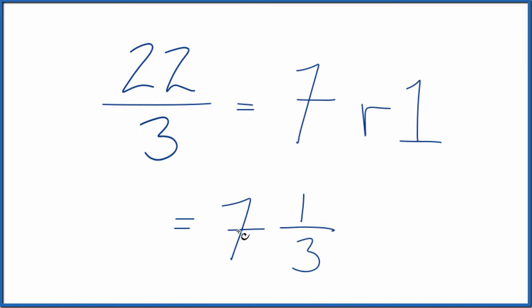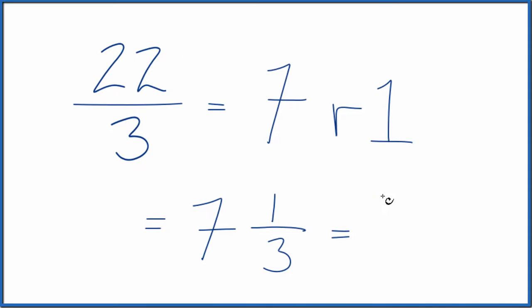We can check our work. 7 times 3, that's 21 plus 1. That gives us 22. We just put that over the denominator. Same thing we started with.